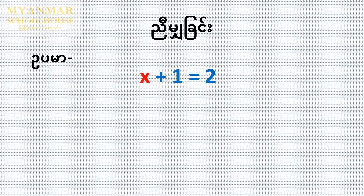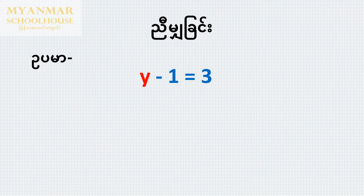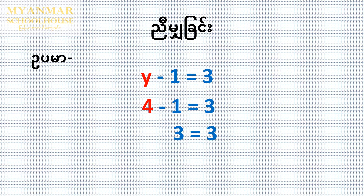We have to write the number: x plus 1 is equal to 2. That is the equation. The equation is 4 minus 1 is equal to 3.